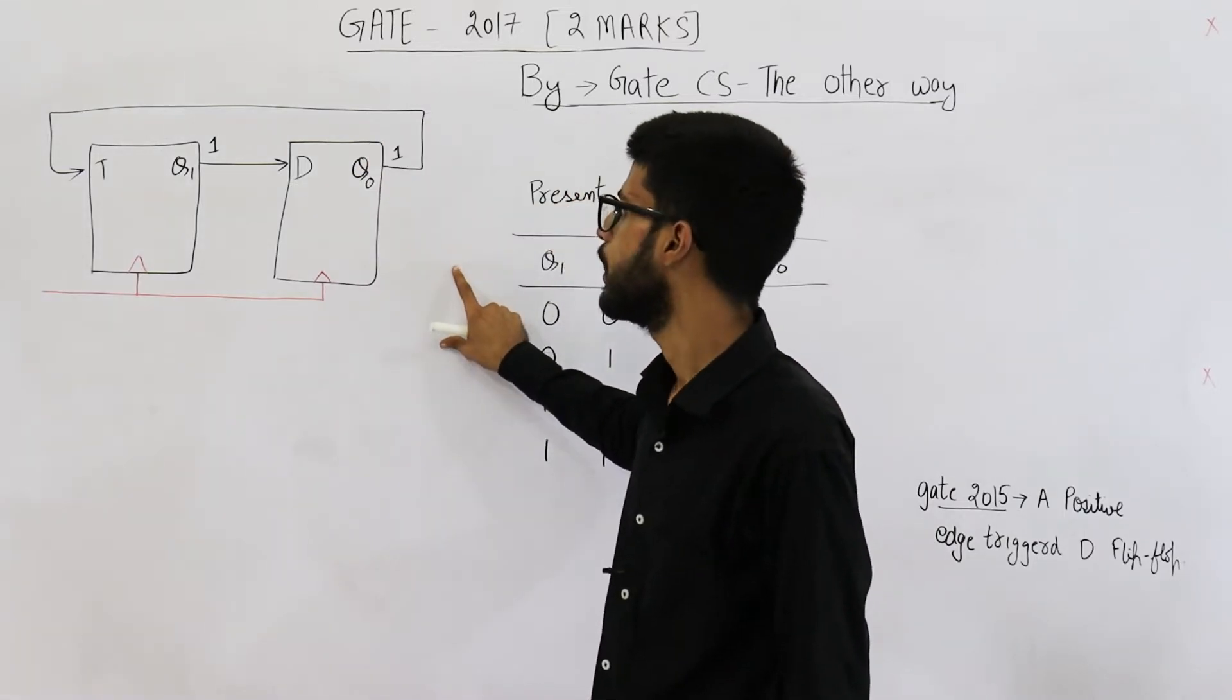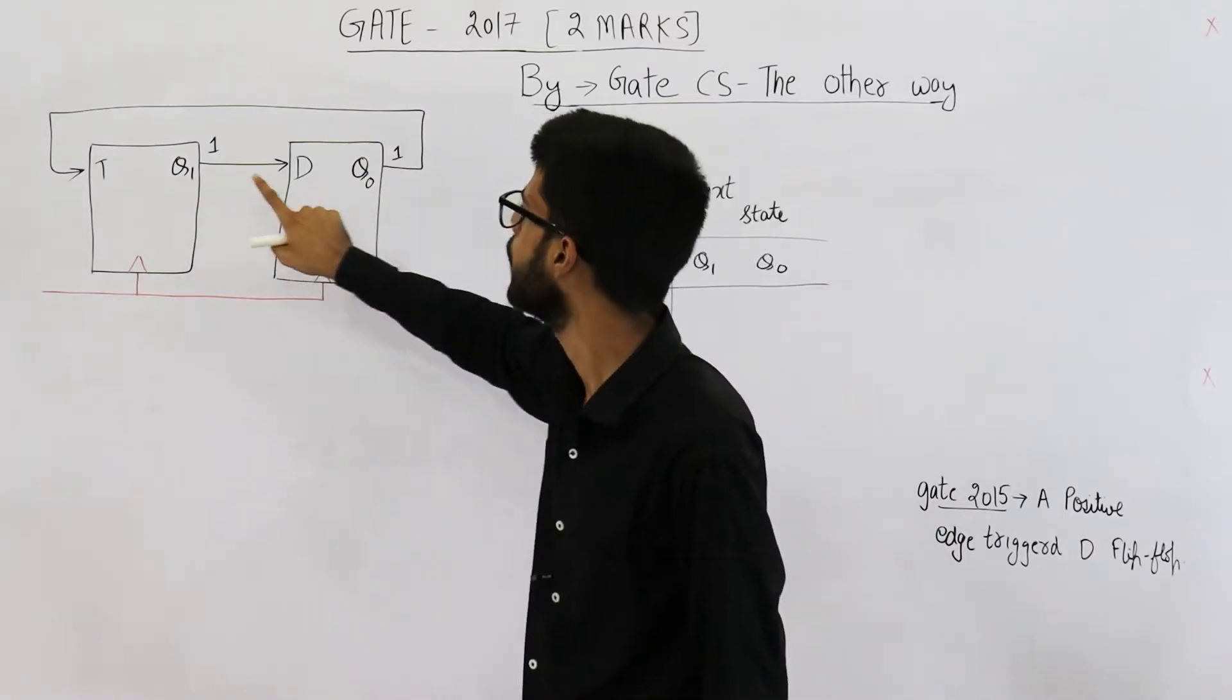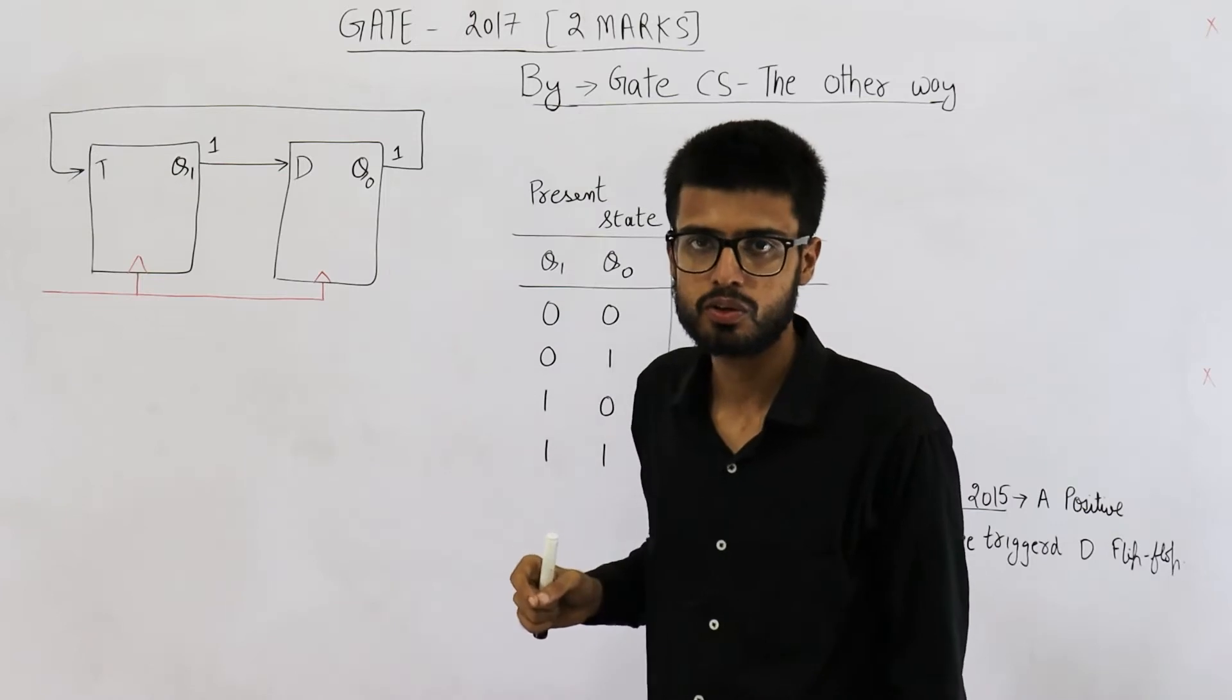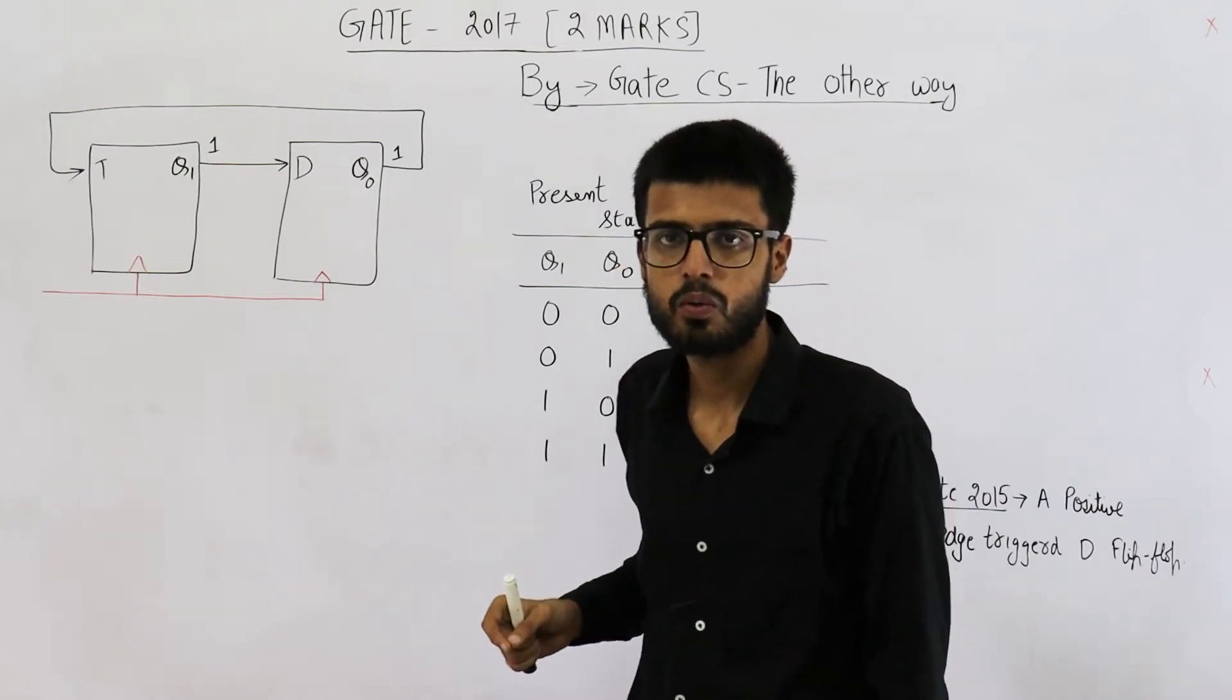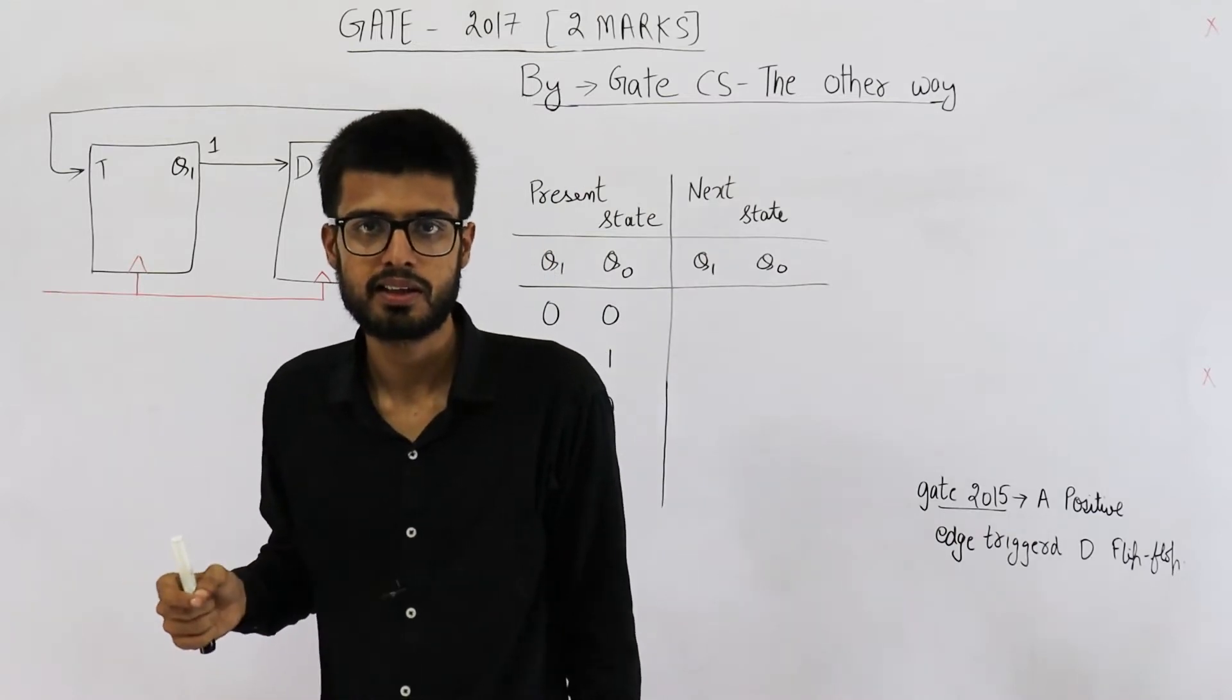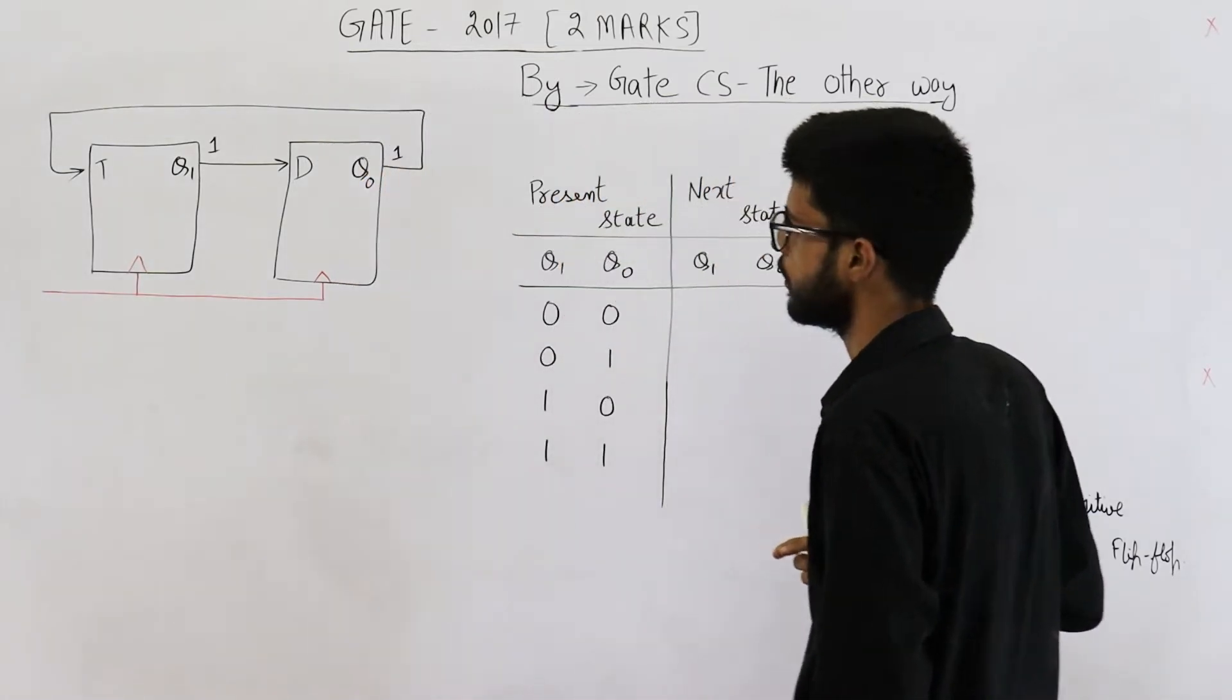They have given you this diagram and they are saying that Q1 and Q0's current value is 11. We need to determine what will be the state of this counter after giving third clock cycle as well as after giving fourth clock cycle.